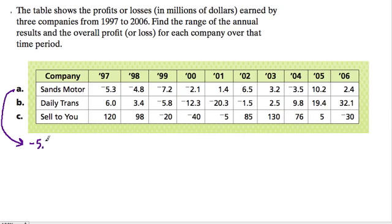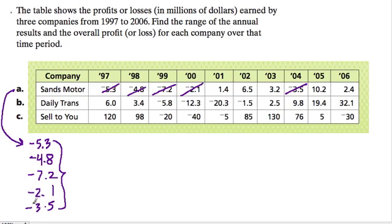For this first company I have negative 5.3, cross that out, plus negative 4.8, plus negative 7.2, negative 2.1, negative 3.5. Those look like all my negatives. So what's the sum going to be here? I'm going to add the decimal parts and the whole number parts separately. 0.8 and 0.2 is 1, plus 0.1 is 1.1, plus 0.5 is 1.6, and plus 0.3 is 1.9. That's the decimals.